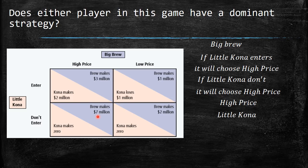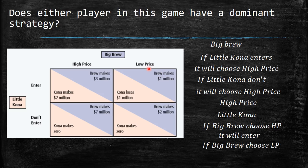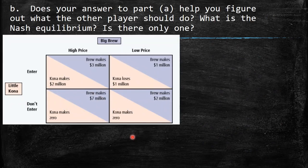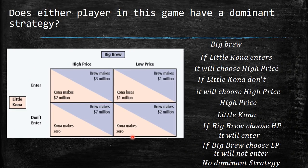Little Kona has no dominant strategy: when Big Brew charges high price, Kona prefers to enter (2 > 0); when Big Brew charges low price, Kona prefers to stay out (0 > −1). Since the decision changes depending on Big Brew's move, Little Kona has no dominant strategy.